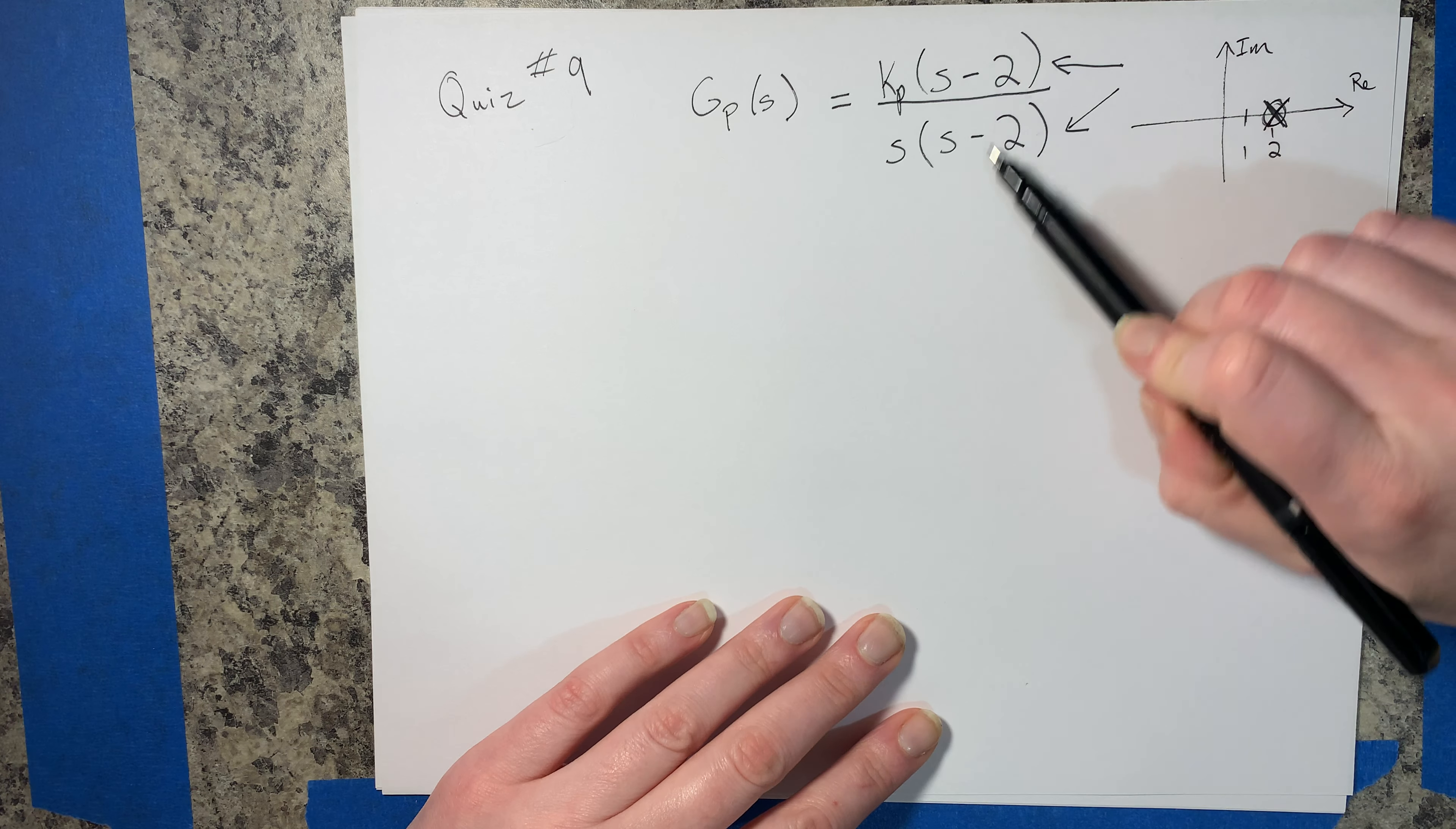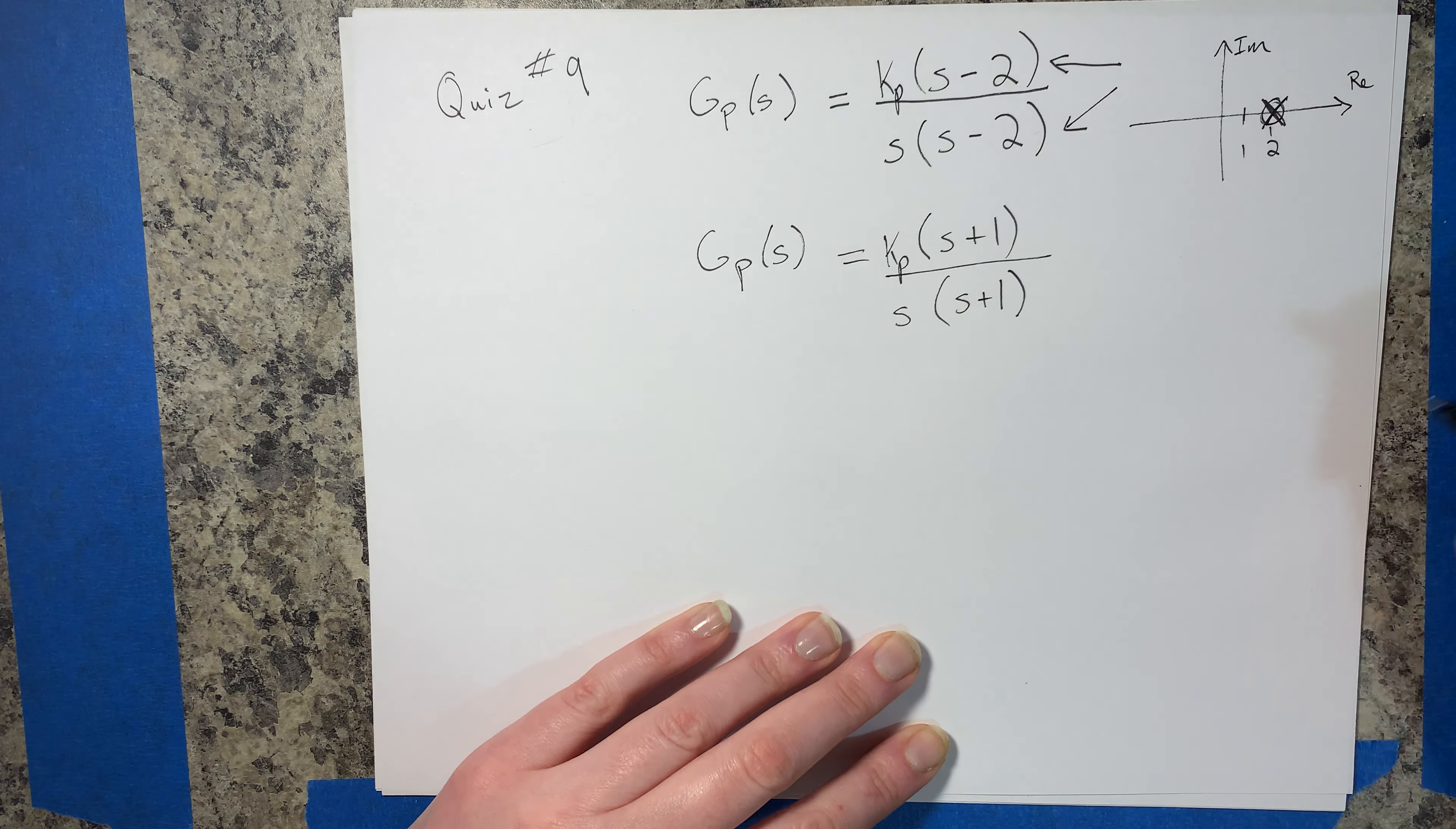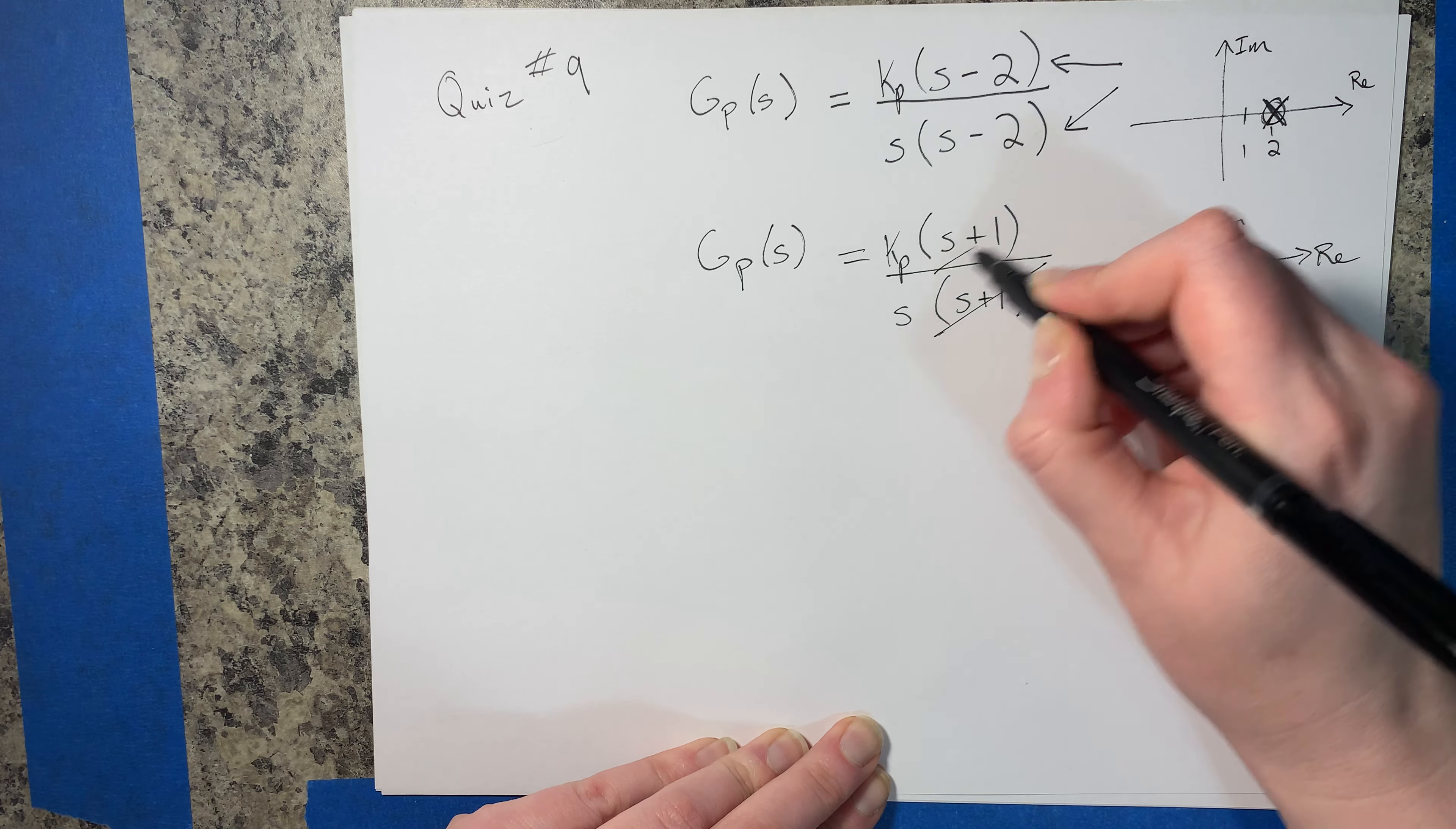It's never okay to do that. It's okay to say, if we had another GP of S, and we have something like this, with our same gain KP and another S over here, just to make it the same complexity. This is over here in the left-hand plane. And so if we were to cancel this, since it's in the left-hand plane, it's actually okay, because it doesn't hide any of the instability. So this is okay.